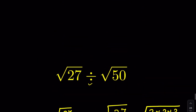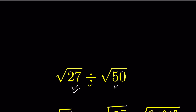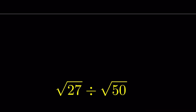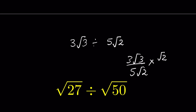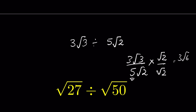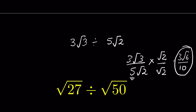We can also simplify the radicals first and then do the division. For example, 27 is 3 squared times 3 under square root, which equals 3 root 3. And 50 is 5 root 2. So we have 3 root 3 upon 5 root 2. Rationalizing the denominator by multiplying by root 2 upon root 2 — since 5 is already a real number, we only need to rationalize the square root — gives 3 times square root of 6 upon 10.